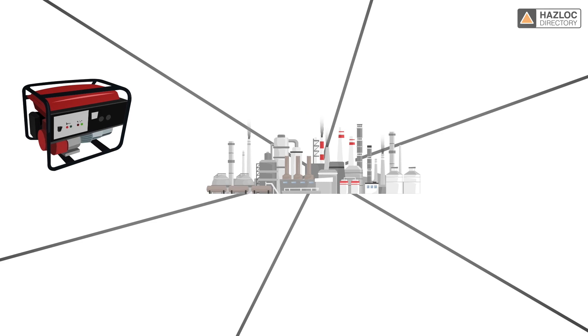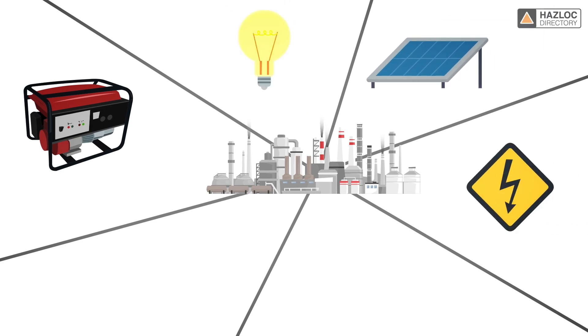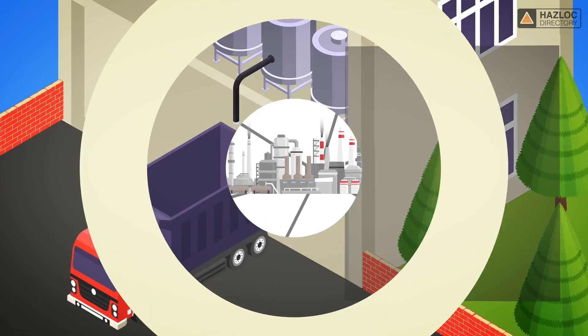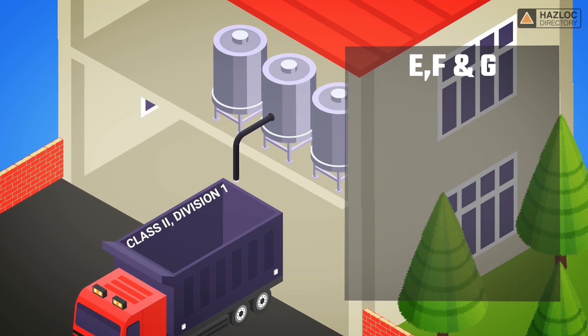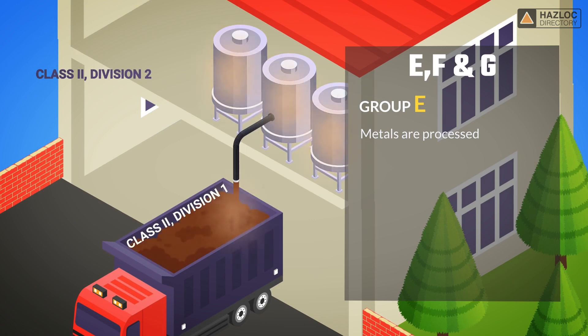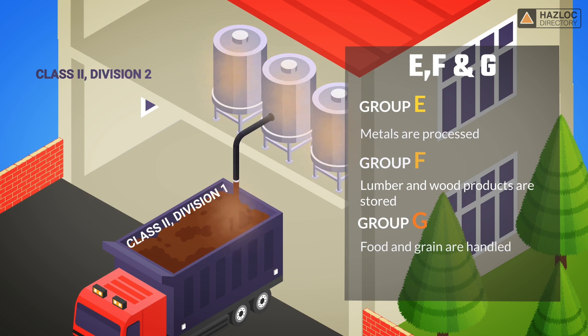Electrical equipment is often installed in locations where there are explosive dusts present. Dust is further classified in three groups in North America. Dust Group E, electrically conductive combustible metal dust, may be found where metals are processed. Dust Group F, combustible dusts other than metal, are found where lumber and wood products are stored. And Dust Group G, solid particles including fibers, may be found where food and grain are handled.